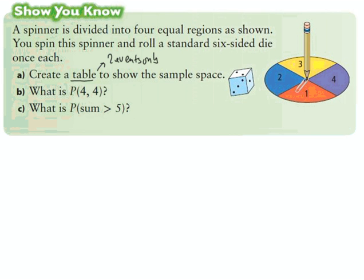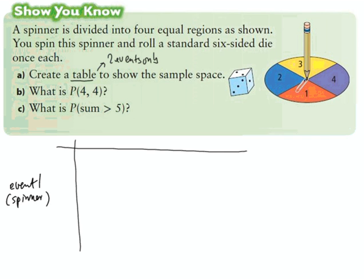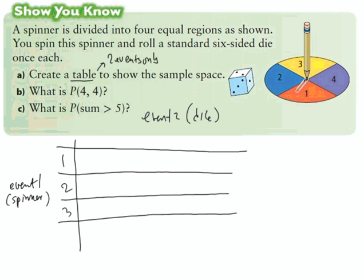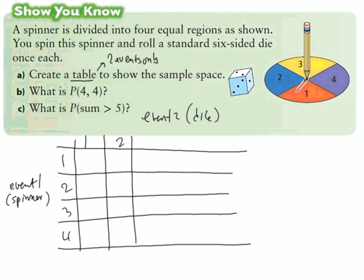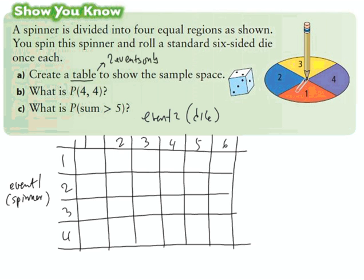For two events you can use a table. Down this side we call this event one — the spinner — and over here we put event two, the die. For the spinner we have a one, a two, a three, and a four. For the die we have a one, a two, a three, a four, a five, and a six.